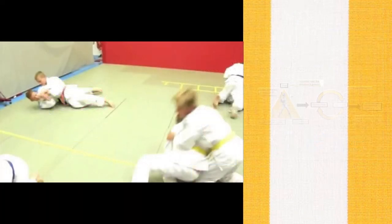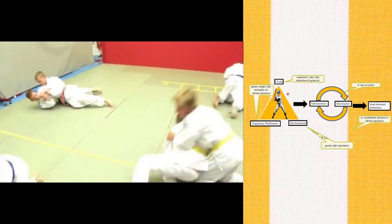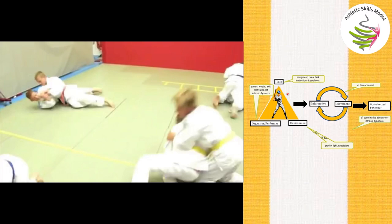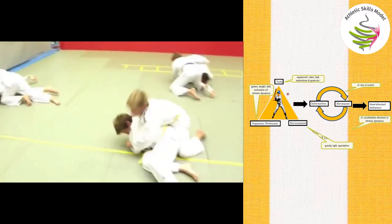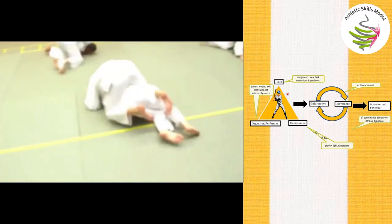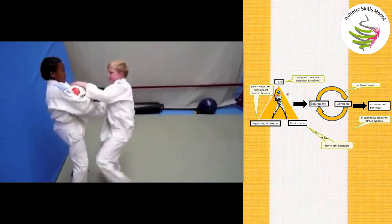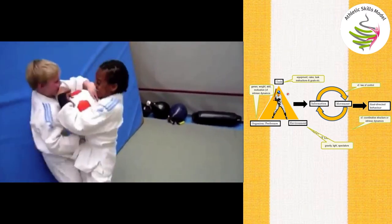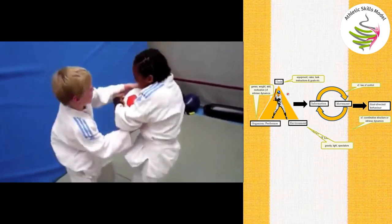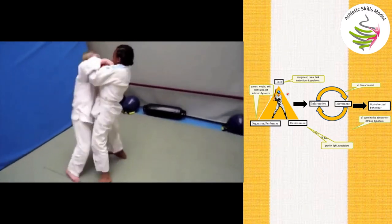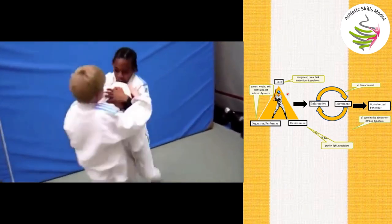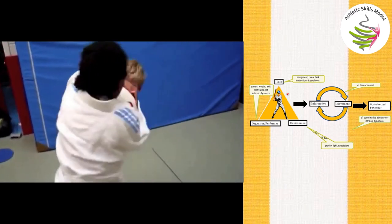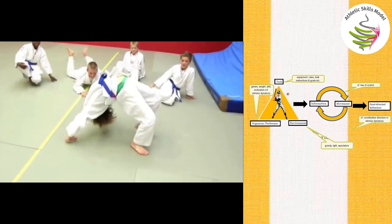The Athletic Skills Model program introduces the following development framework. First, the child needs to become a versatile good mover where movement associates with fun. Subsequently, they will develop into an athlete, specialise in one sport, and finally develop into the absolute specialist within this sport. The key of the model is: first become an athlete, only then specialise as an athlete.